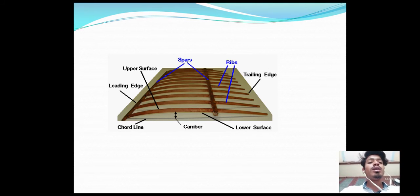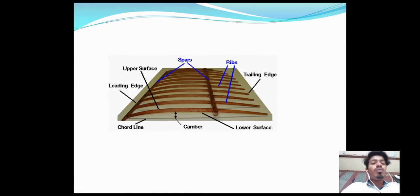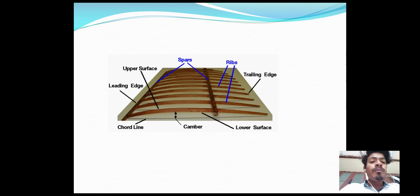This is the upper view of the wing showing the arrangement of airfoils in a wing. We can identify the leading edge, trailing edge, upper surface, chord line, camber line, and lower surface of the airfoil. Spars are connected to the airfoils.